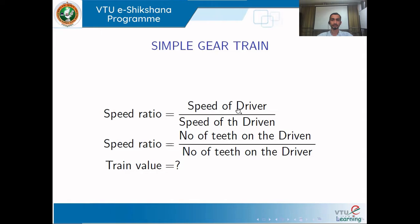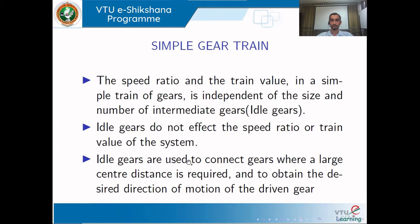The speed ratio is given by the speed of the driver divided by speed of the driven, which is directly equal to the number of teeth on the driven divided by the number of teeth on the driver. The train value is the inverse of the speed ratio. These intermediate gears are called idler gears, and they are used whenever the center distance is very large or to achieve a required direction of rotation of the output gear.